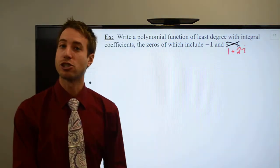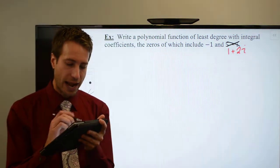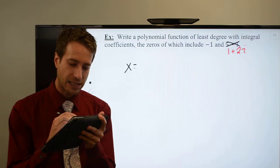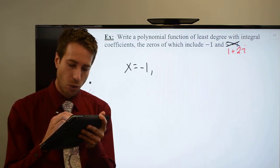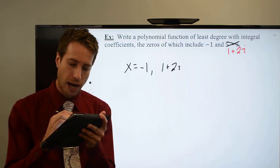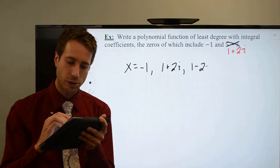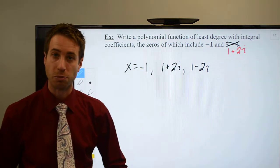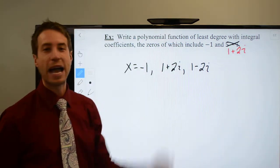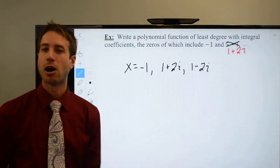So thanks to the complex conjugate theorem, I know right away that my zeros are going to be x equals negative 1, 1 plus 2i, and the complex conjugate theorem tells me 1 minus 2i must also be a zero. So we're going to go ahead and set up our problem, multiply it all out.